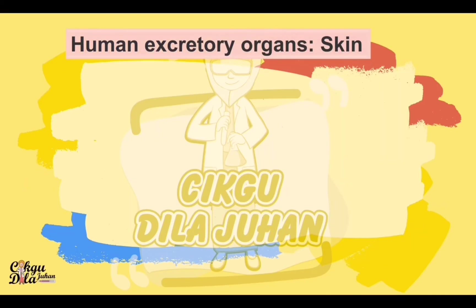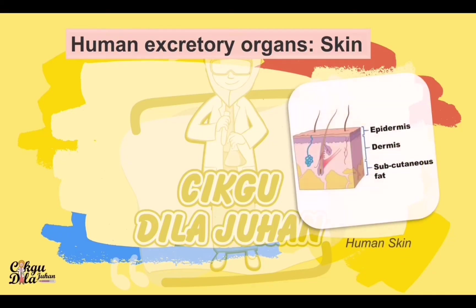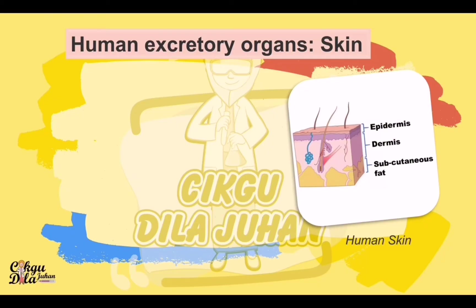The third human excretory organ is the skin. Human skin can be divided into three layers: the epidermis, dermis, and subcutaneous fat. The outer layer is the epidermis, second is the dermis, and the innermost layer is the subcutaneous fat.